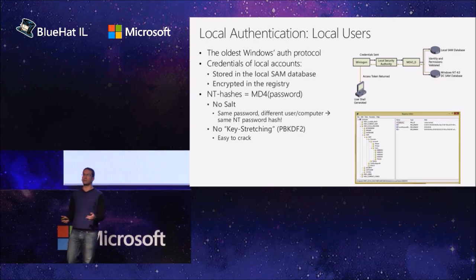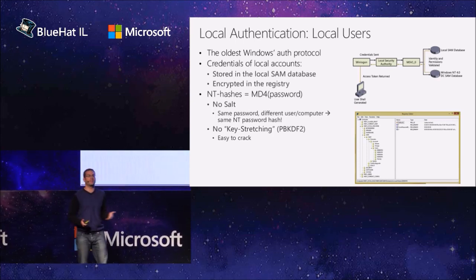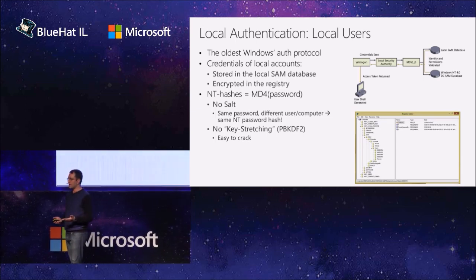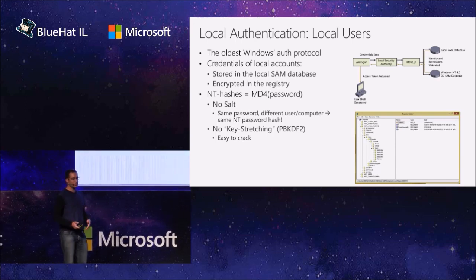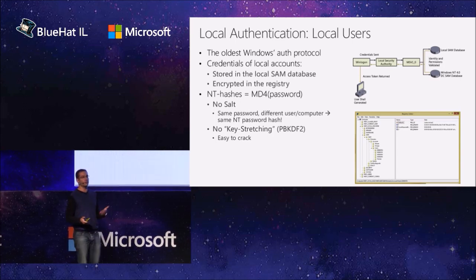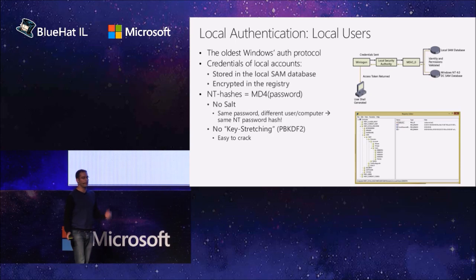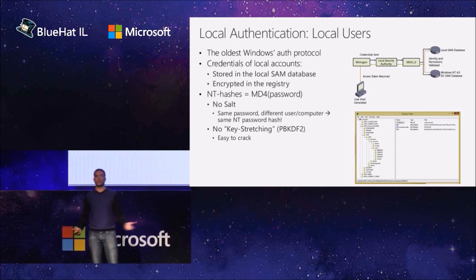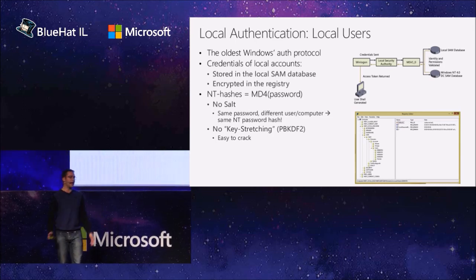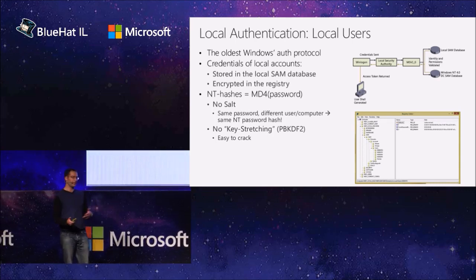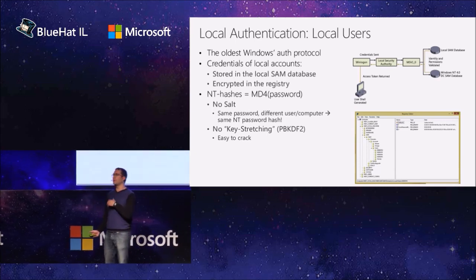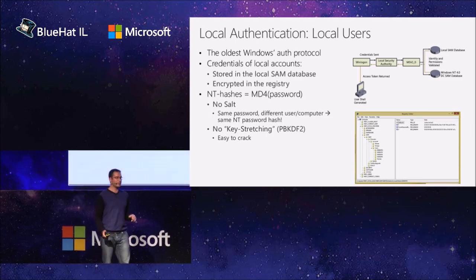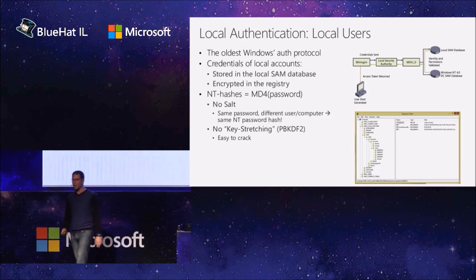Local authentication is the oldest Windows authentication protocol. This is very basic — probably the first authentication on a machine would be a local one. Because when a machine is born and Windows is installed, there is no domain the machine is aware of, so authentication must take place locally. The credentials of local accounts are stored in the local SAM database, which is encrypted in the registry. And the hashes — since it's old — use MD4 password NTLM hash with no salt. So same password for different users on different machines: same NT password hash. There is no key stretching, no PBKDF2, no thousands of hash iterations, so it's very easy to compute.